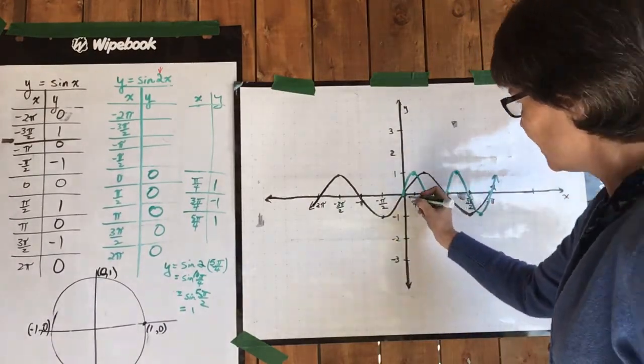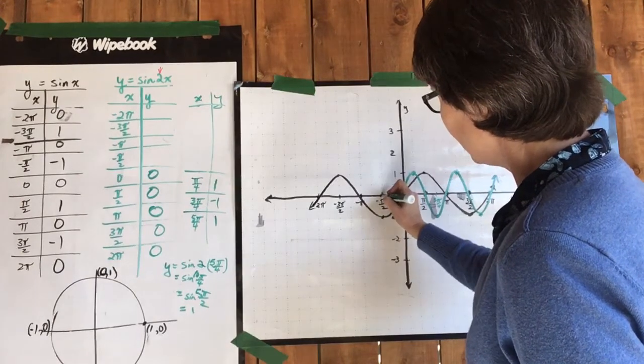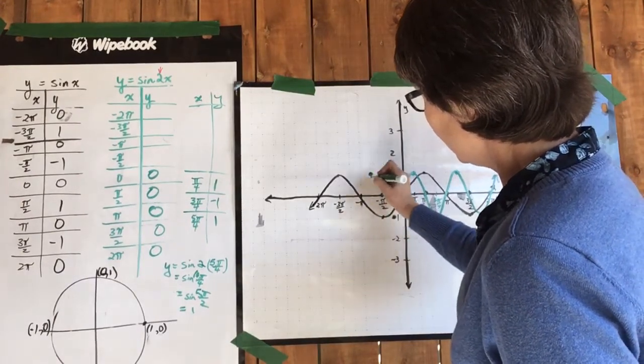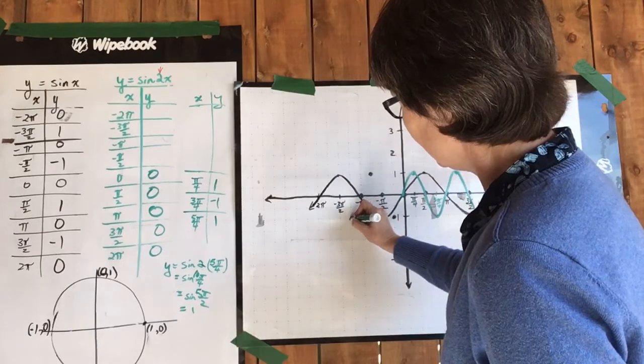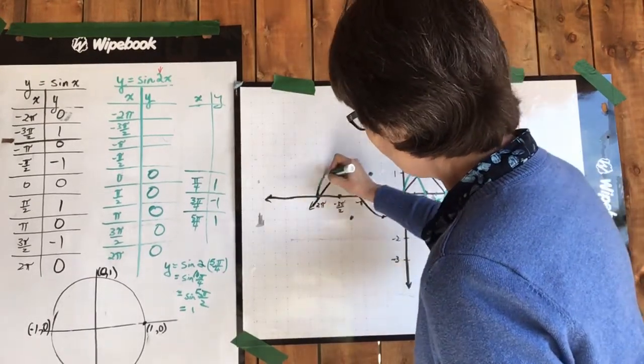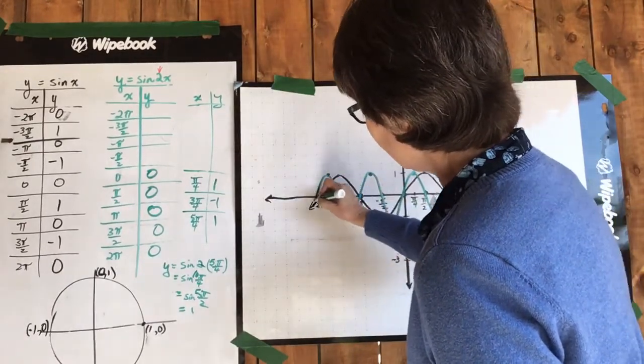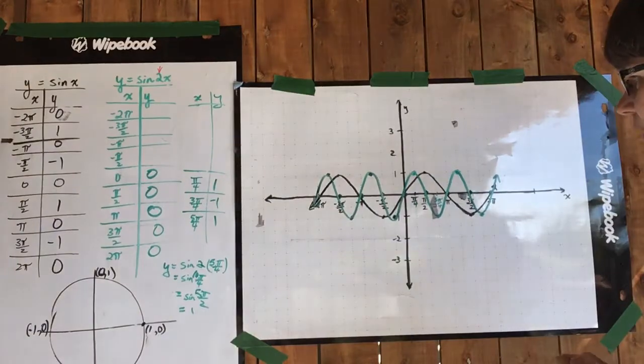It also continues that same thing going back in the other direction: negative one here, zero, one, zero, negative one, zero, one, zero. And look what happens.